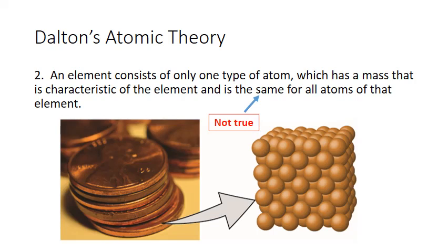We actually now know that this is not completely true as Dalton stated it. It turns out that there can be small variations in mass between those atoms of copper. These are called isotopes. However, all the other properties of those atoms of copper are still identical, and the average atomic mass of those isotopes is characteristic of the element still.